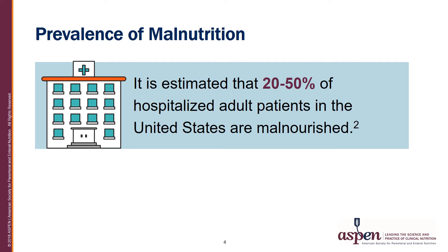The prevalence of malnutrition has a wide range, and anywhere between 20 and 50 percent of hospitalized patients in the United States are malnourished. The criteria to classify malnutrition in the literature are not uniform, which is why we see this wide range of prevalence.